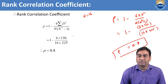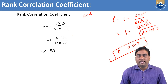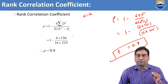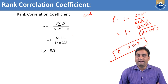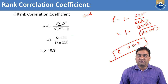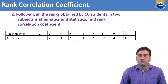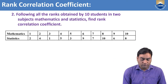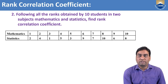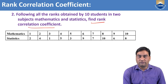A rho of 0.8 means the relation is positive. Like this, if the ranks are known, we can find the difference between ranks d, then d square. Suppose following are the ranks obtained by 10 students in two subjects, mathematics and statistics — find the rank correlation coefficient.